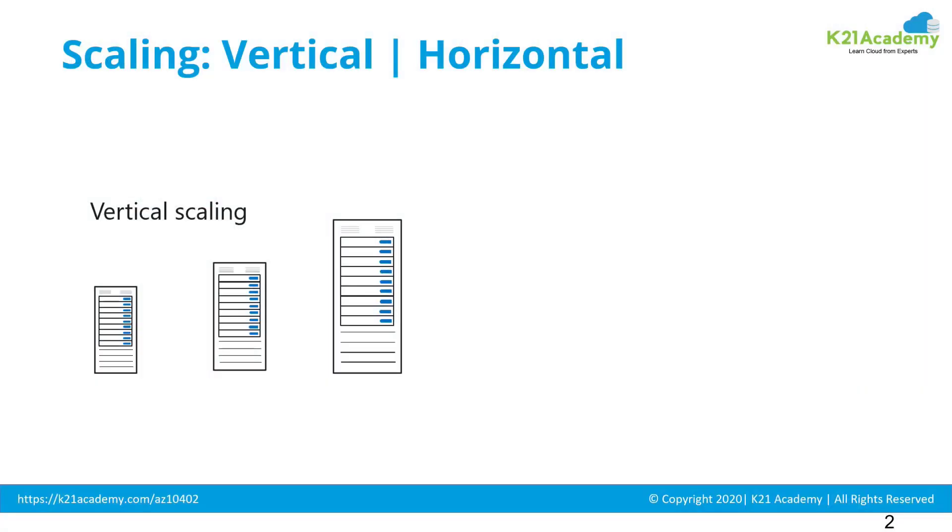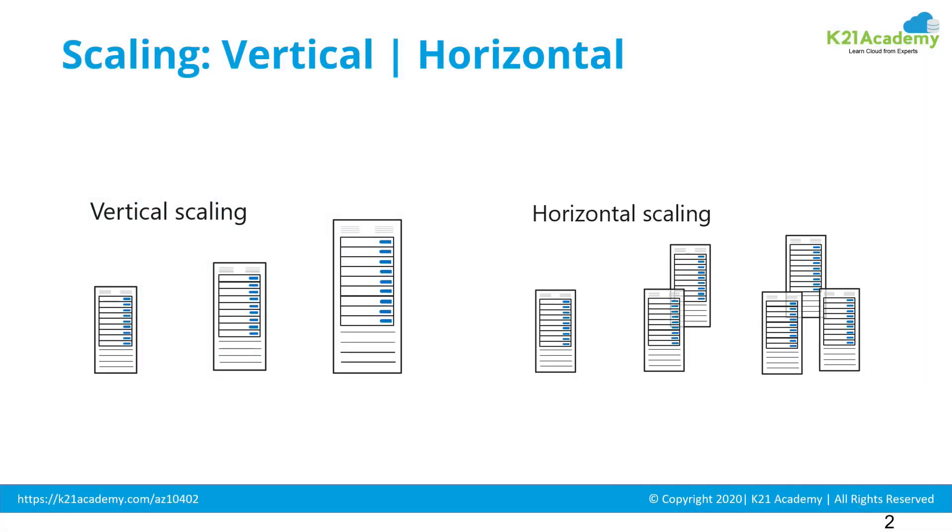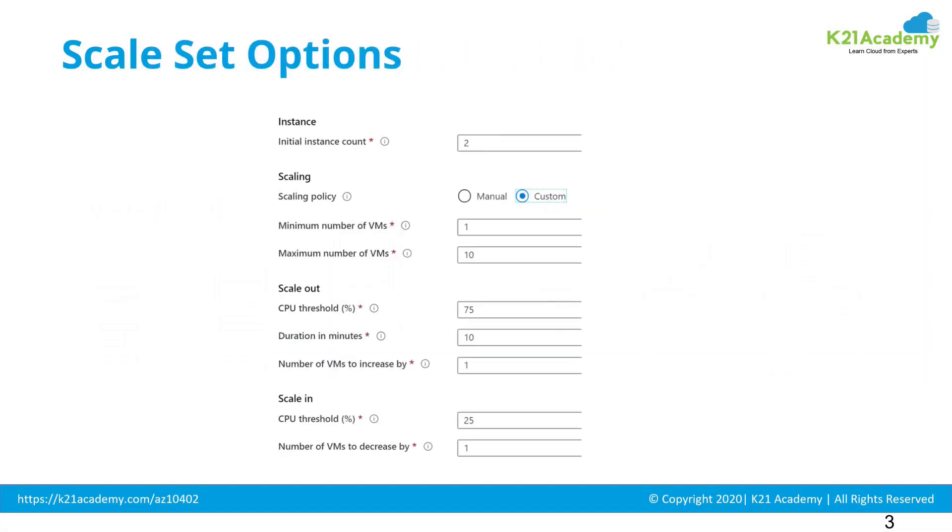What is the difference between vertical or horizontal scaling? What are the scaling options in a scale set in Azure? Or step-by-step procedure to configure virtual machine scale sets in Azure? I'm going to cover all this in this episode in two parts.